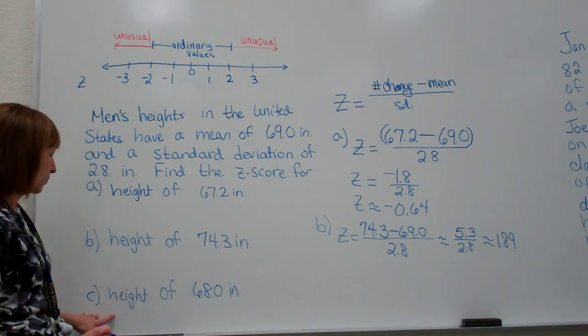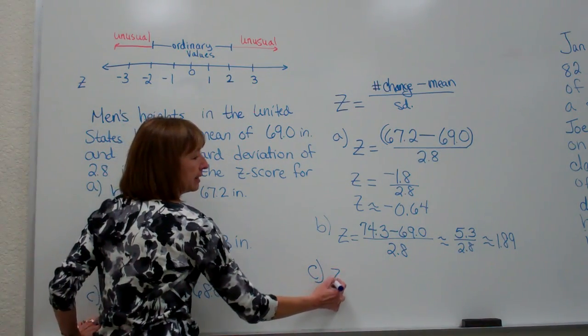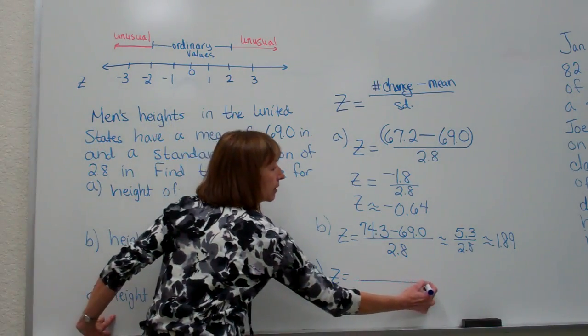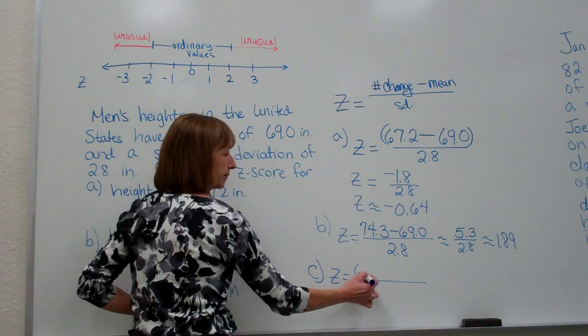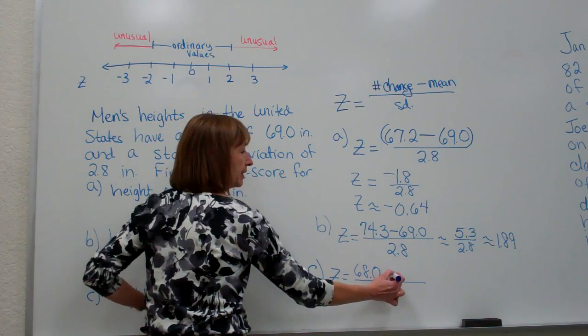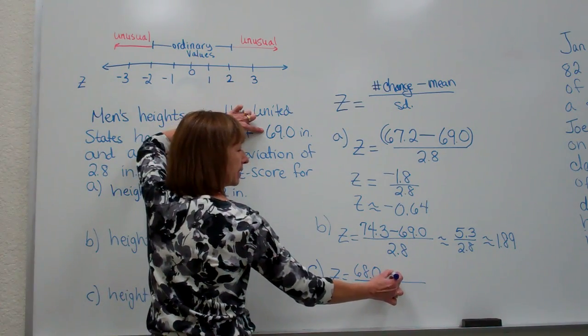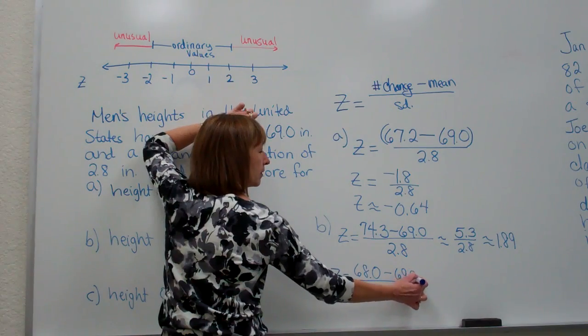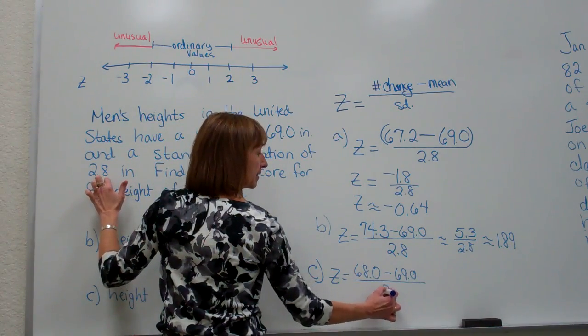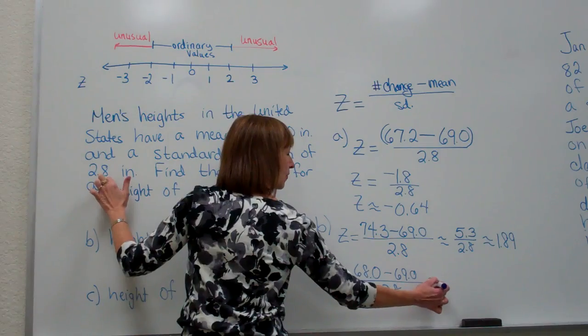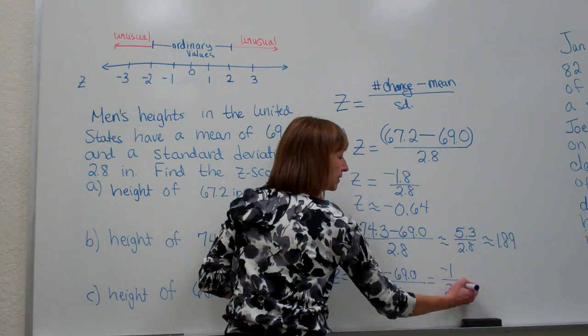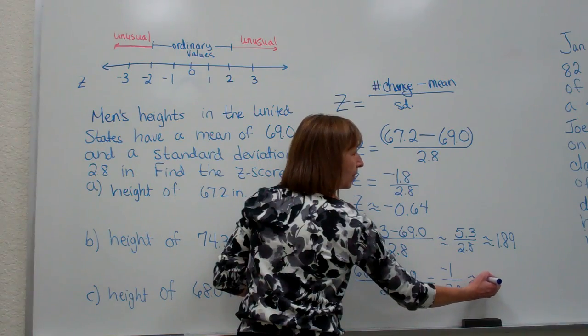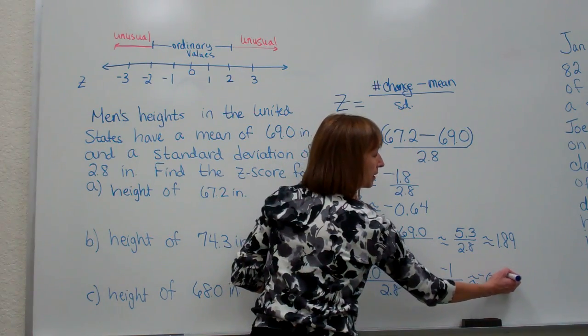And then the last one, part C, z is equal to the number we're changing, 68.0, minus the mean of the data set, 69.0, divided by the standard deviation of the data set, 2.8. So that gives me negative 1 over 2.8, which is about negative 0.35.